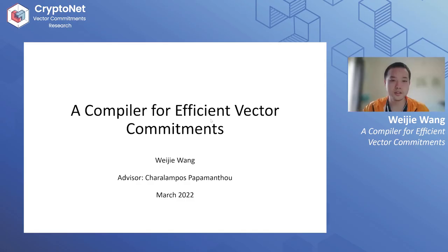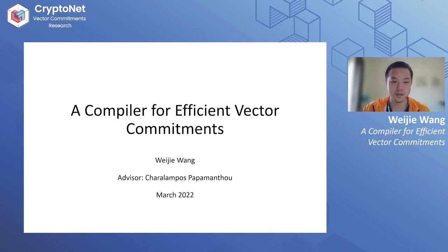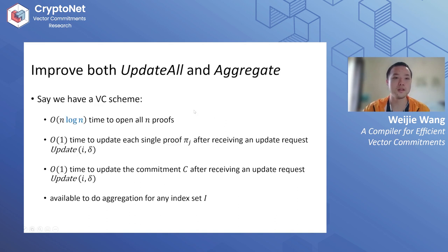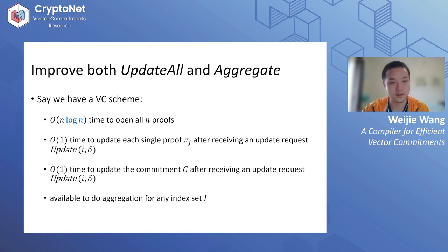This is a compiler for efficient vector commitments, which builds a new vector commitment from an existing one. The motivation comes from aSPC — I want to improve the update-all-proofs algorithm, but it seems very difficult. So instead I want to build another vector commitment based on an existing scheme to improve both update-all and aggregate.